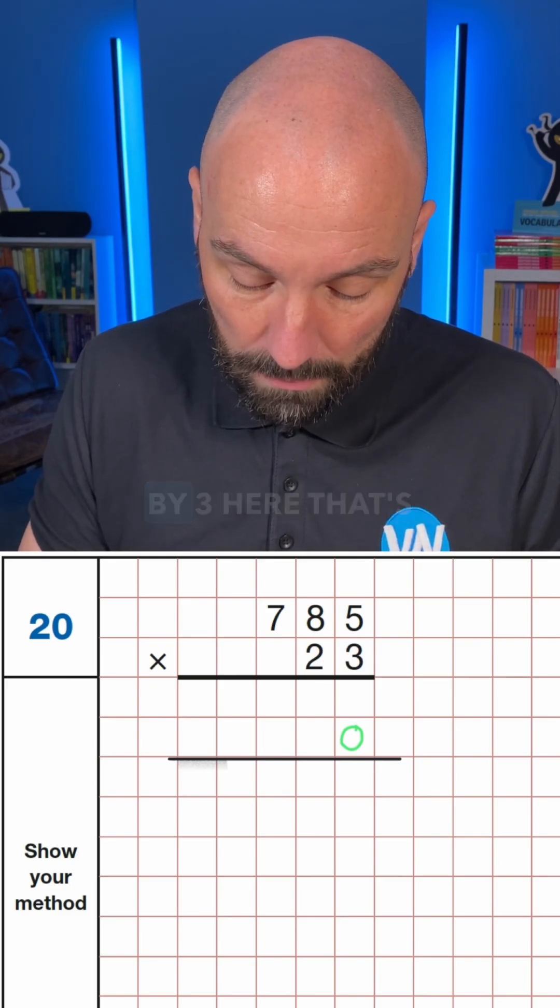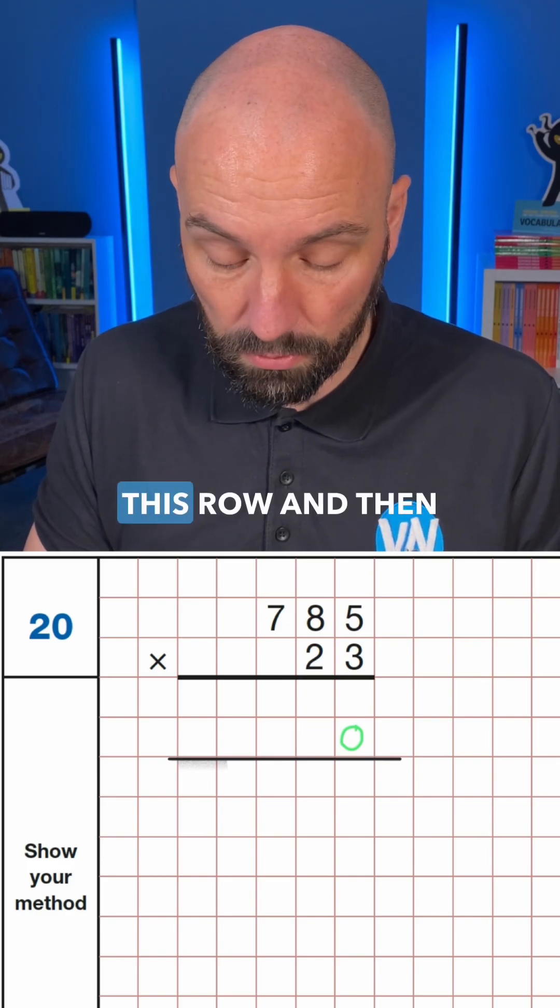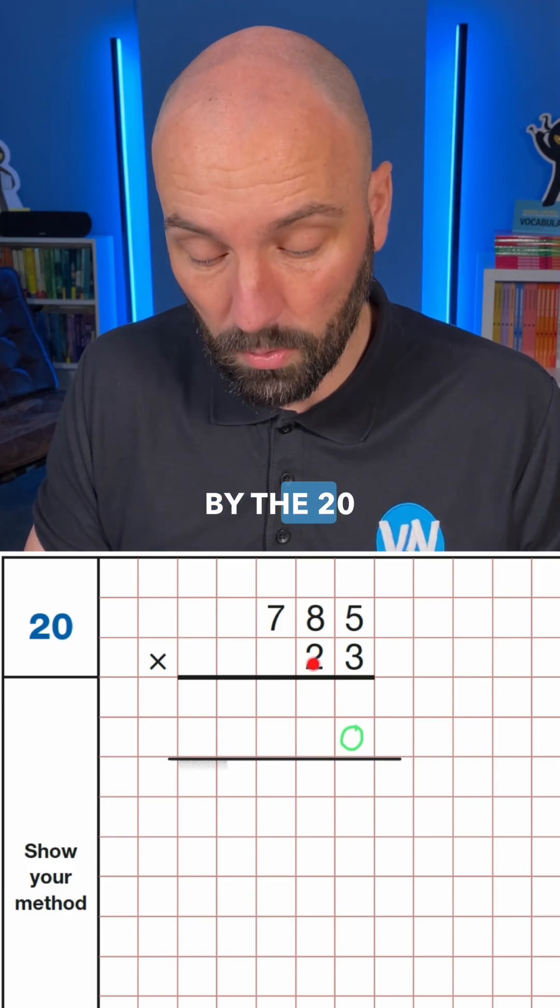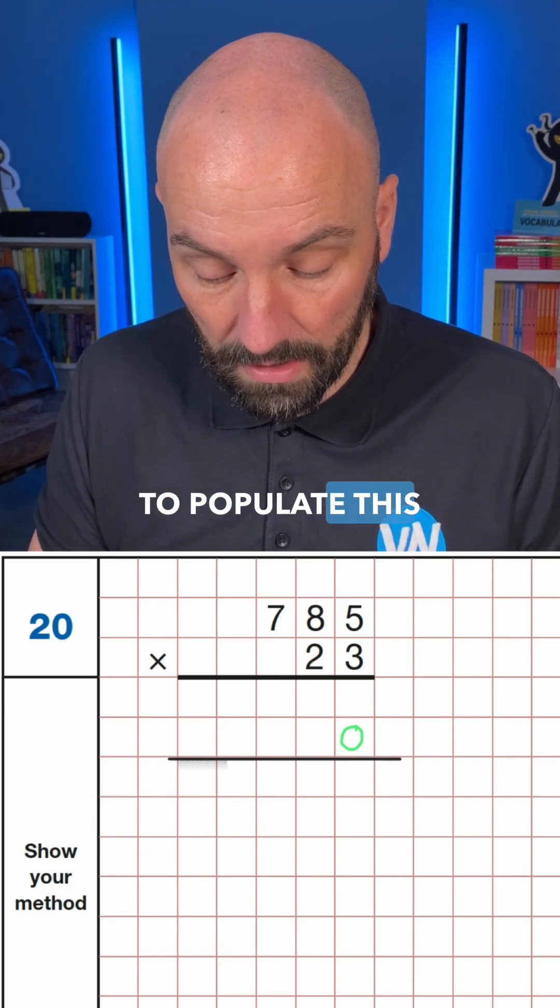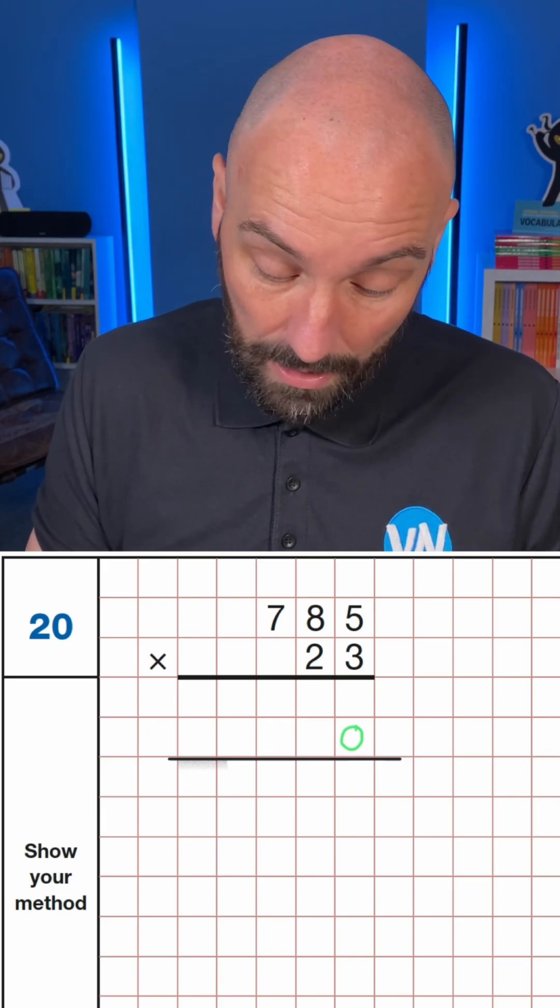So as I'm multiplying by 3 here, that's going to populate this row, and then when I multiply by the 20, that's going to populate this row, and then we can add them together.